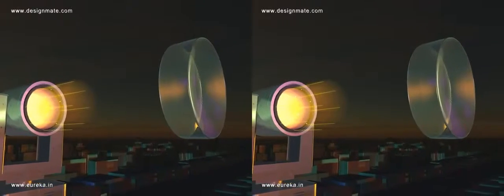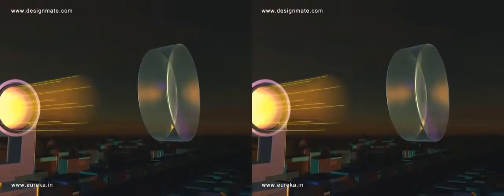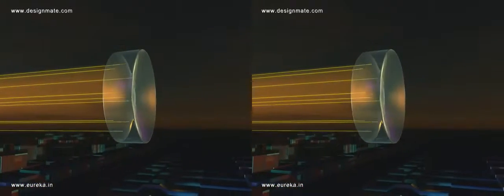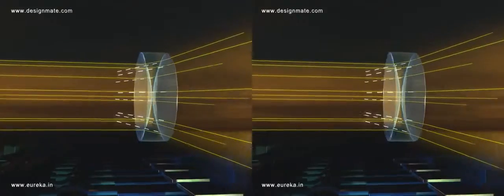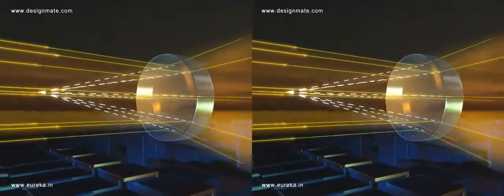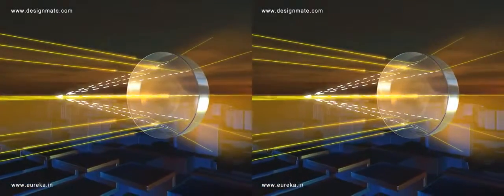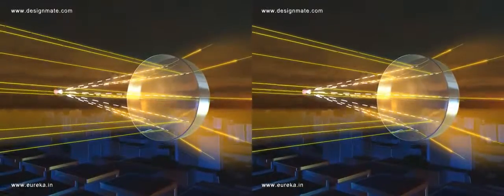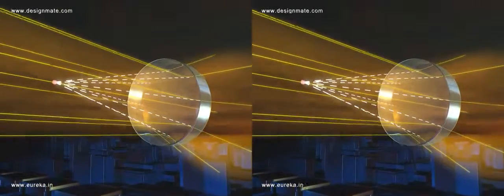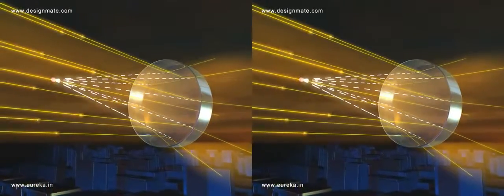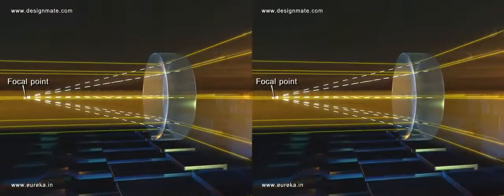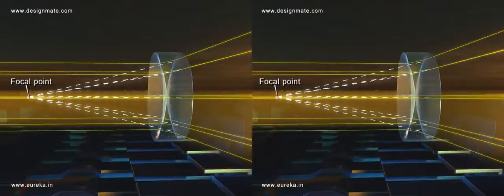Parallel rays of light incident on the concave lens undergo divergence as they emerge on the other side. If the divergent rays are extended backwards, they appear to meet at one point on the same side as the object. This point is called the focal point of the concave lens.